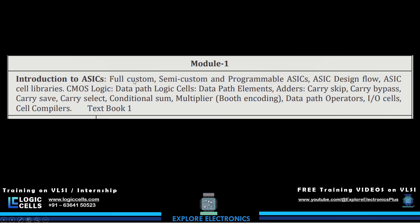ASICs can start with a full custom design, semi-custom design, or programmable ASICs. Full custom means the IC is fully customized for a particular application. Semi-custom means some components are already available and we use them. Programmable ASICs are also covered in the first module, along with the ASIC design flow, cell library related to ASICs, and then CMOS logic.